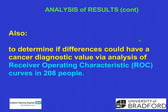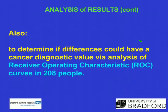What we want to know is if we can determine whether the differences have a cancer diagnostic value via analysis of receiver operating characteristic curves in 208 people. Using both a receiver operating characteristic curve approach and a regression analysis approach, we were able to come up with some answers.